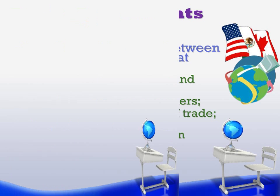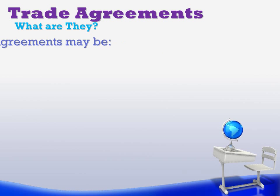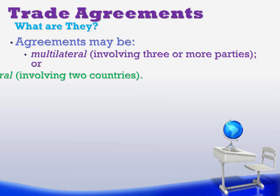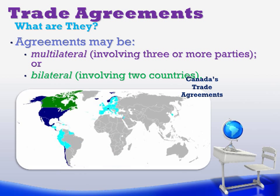Trade agreements can be between two or more countries. If it's between three or more parties, we consider this a multilateral trade agreement. If it's between two countries, we consider this a bilateral trade agreement. From this map of the world, you can see that Canada has many bilateral and one large multilateral trade agreement.